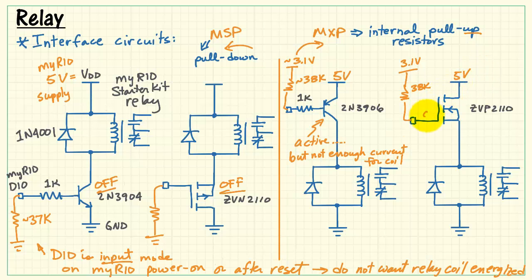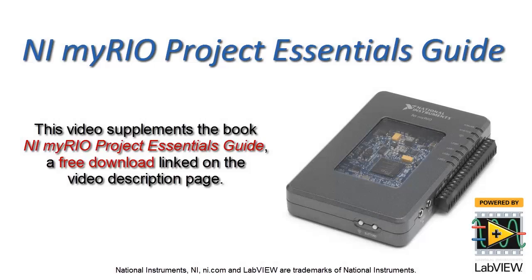For the P-channel version, looking at the gate source voltage right here, we need a gate source voltage below minus 1.9 volts. Comparing this value to 3.1 minus 5 looks like it could be just barely past threshold, but it's not enough to activate the coil. Therefore, the coil will be off after a MyRio reset or after cycling the power.